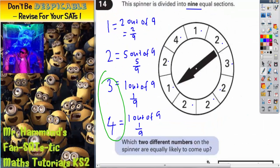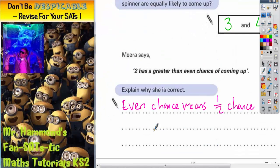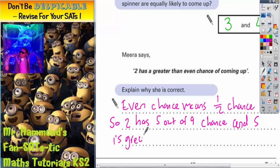And basically, what we need to say is that the number 2 has a 5 out of 9 chance. And 5 is greater than half of 9. So if you do half of 9, you would actually get 4.5.